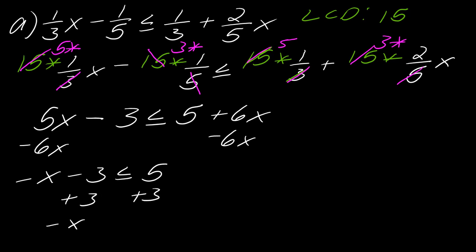Then I can add 3 to each side. So I've got negative x is less than or equal to 8. And then to finish getting x by itself, I divide both sides by negative 1. Now, when you divide by a negative number, you have to flip the direction of your inequality. So the answer here then is going to be x is greater than or equal to negative 8.